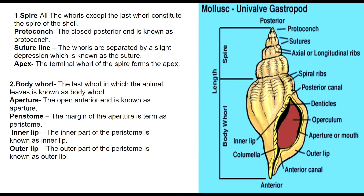The body whorl is the last whorl in which the main organism lives. What is the spire? All the whorls except the last whorl constitute the spire of the shell. The protoconch is the closed posterior end. The whorls are separated by a slight depression which is known as a suture, and this line is known as the suture line. The terminal whorl of the spire is called the apex.